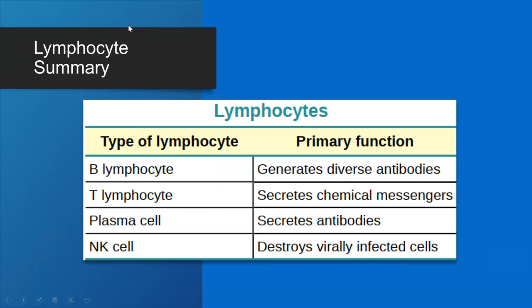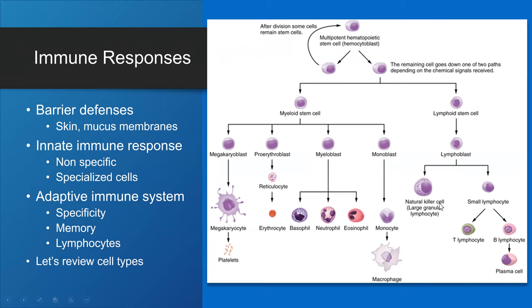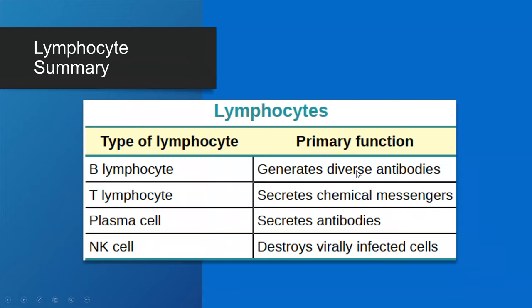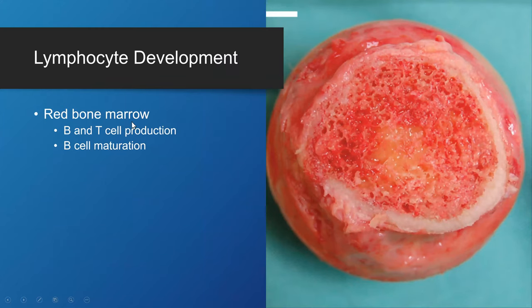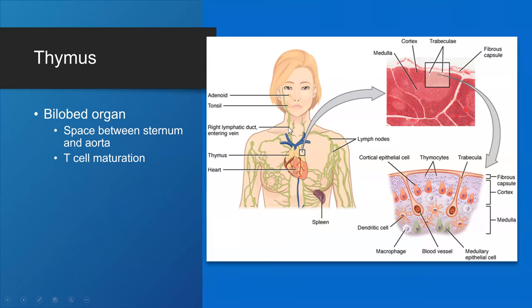Looking at B and T lymphocytes, plasma cells, and natural killer cells: B lymphocytes create diverse antibodies, T lymphocytes secrete chemical messengers, plasma cells secrete antibodies, and natural killer cells destroy virally infected cells. Regarding lymphocyte development: they develop first within the red bone marrow, where both B and T cell production occurs. B cells mature within the red bone marrow, while T cells migrate from the red bone marrow into the thymus — a gland on top of the heart — where they mature.